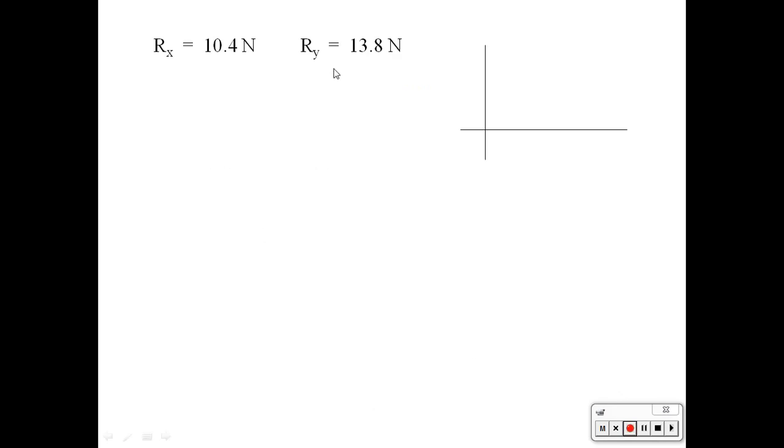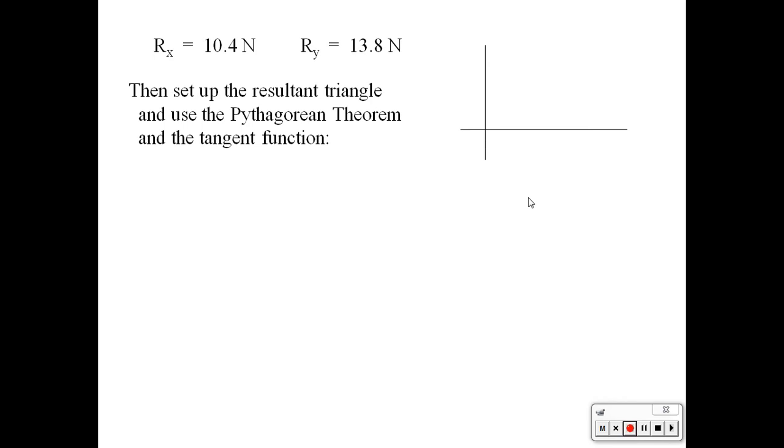So now we have our X component and our Y component to the resultant. So now we can draw our vector triangle. There's my X component. There's my Y component. Add them tail to tip. And we can get our resultant vector from where we started to where we finished. Notice that it's a right triangle. So now we can use the Pythagorean theorem to find the magnitude and the tangent function to find the direction of this resultant.